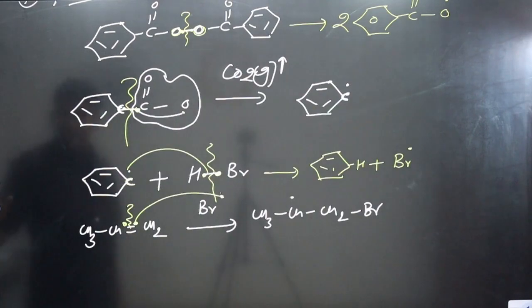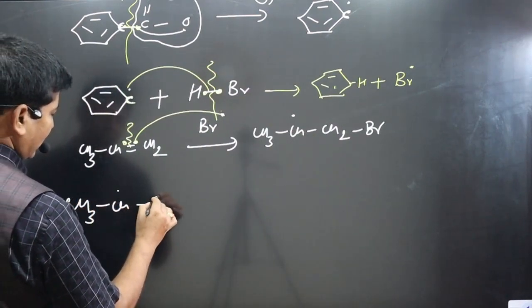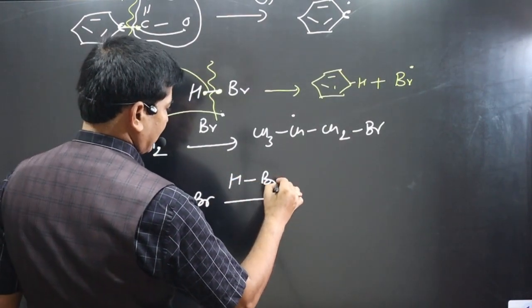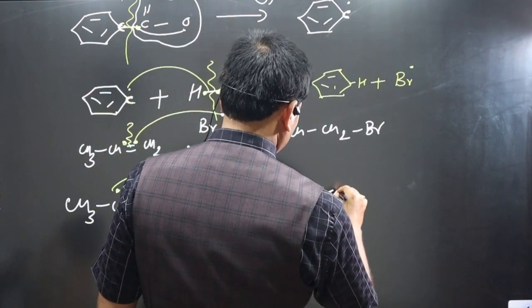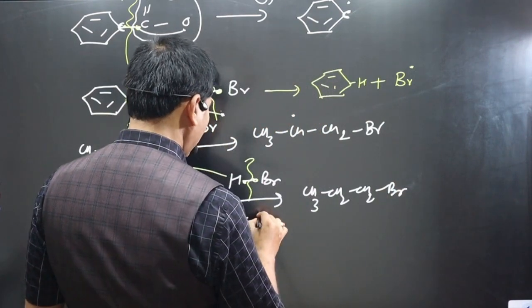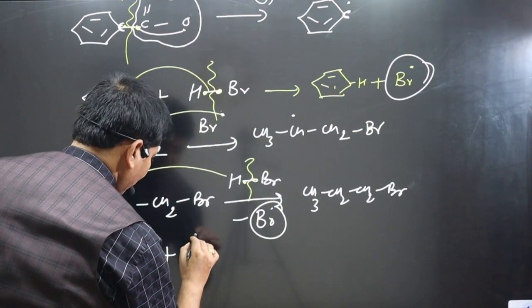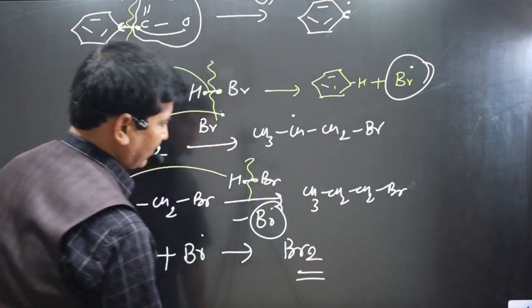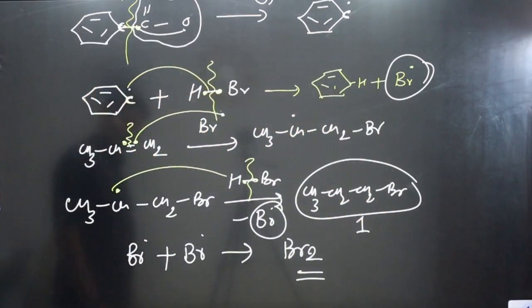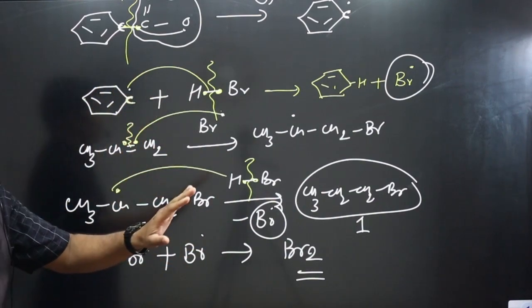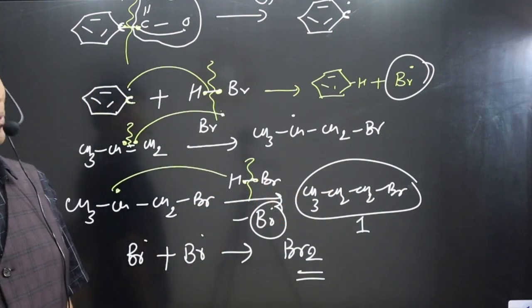The secondary carbon radical then reacts with another HBr molecule. Equal homolytic cleavage: the S–Br bond breaks, giving an S• and Br•. The carbon radical combines with H to give CH3-CH2-CH2Br — 1-bromopropane. The Br• is regenerated and continues the chain. The two Br• radicals can also combine to form Br2. The main product is 1-bromopropane, a primary alkyl halide.